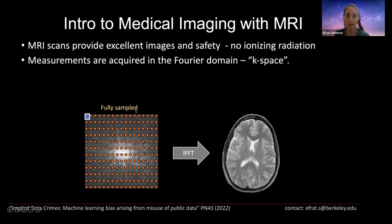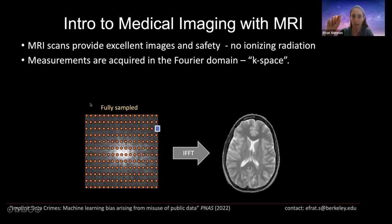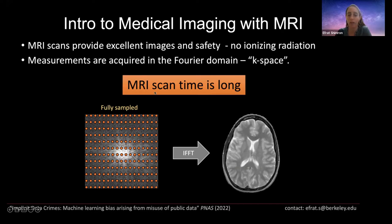In MRI, we sample the Fourier domain, known as k-space. Whenever I say k-space, please remember this relates to the Fourier domain of the image. What we measure in MRI is not the image itself but measurements in the Fourier domain. If we measure them at the rate dictated by the Shannon-Nyquist sampling theorem, we get a great image. But this takes quite a long time because data is acquired in a pixel-by-pixel manner. Due to hardware limitations, this can take several minutes per image, leading to MRI's main downside: long scan time.